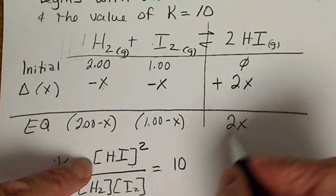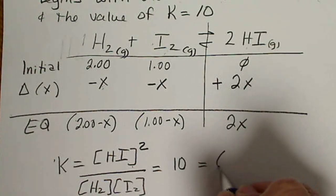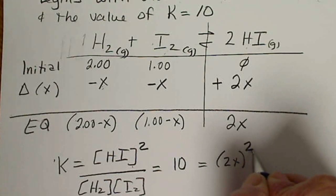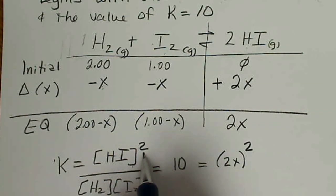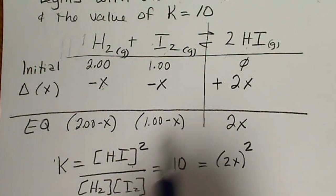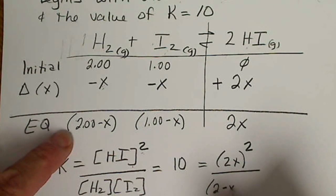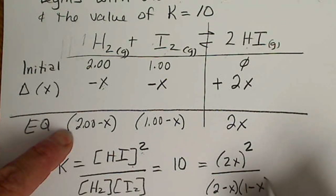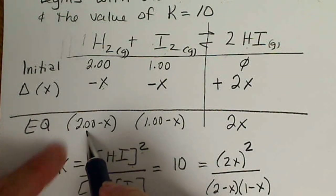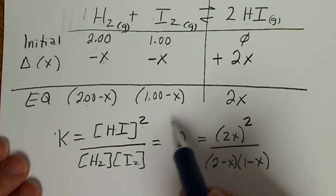So if I plug this in with what we've got given at equilibrium, HI is 2X, so that concentration still has to be squared because that 2 moles shows up here. And then we're going to divide that by 2 minus X and 1 minus X.